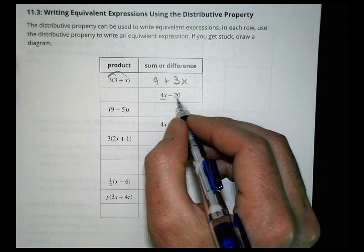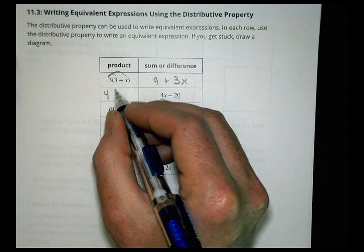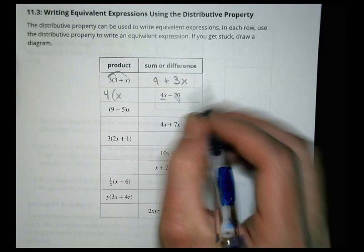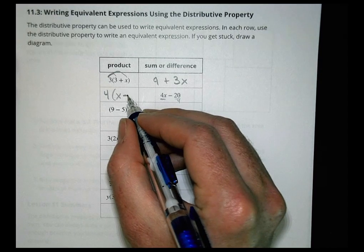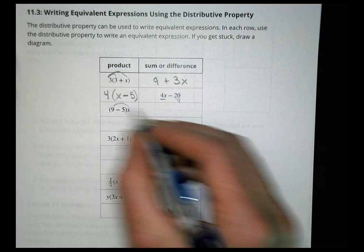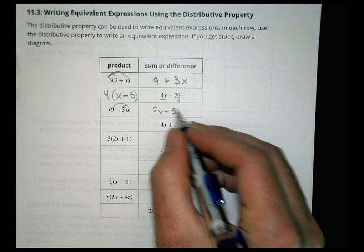Here's the product, here's the sum. This is 3 times 3 is 9 plus 3x. What do they both have in common? We can take a 4 out of here. If I take a 4 out of 4x, I'm left with x. 20 divided by 4 is 5. Keep your minus sign, so 4(x - 5).